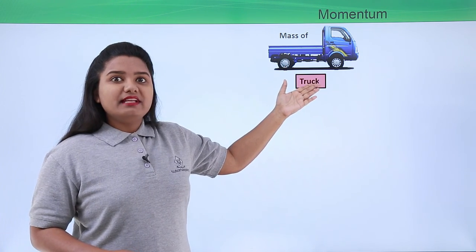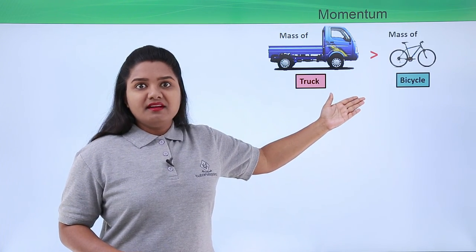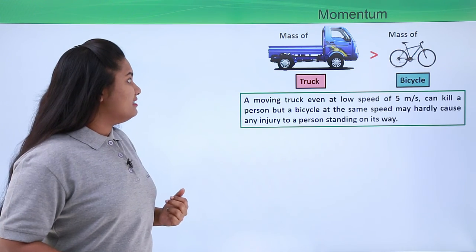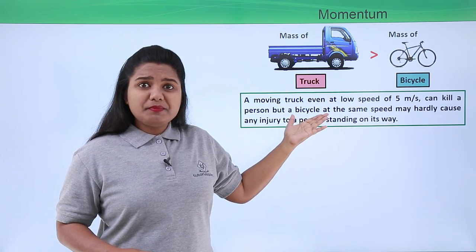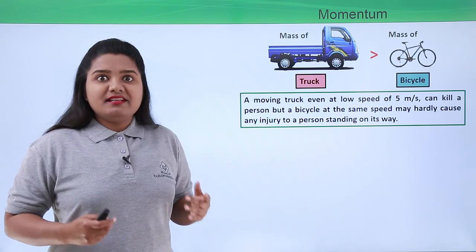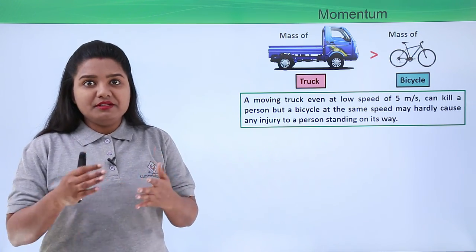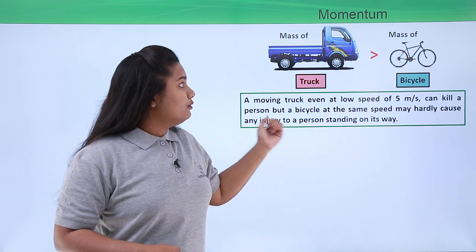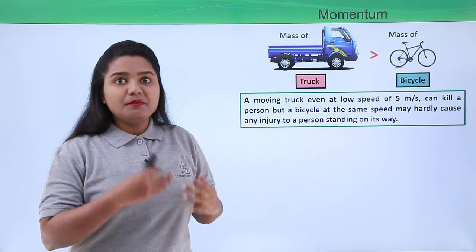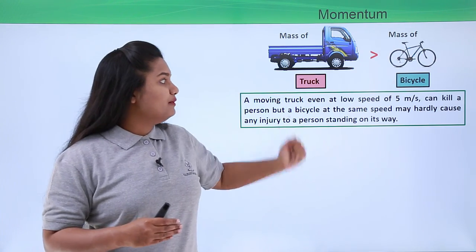We clearly know that the mass of a truck is much more than the mass of a bicycle. If these two objects are moving with the same speed, a truck moving even at a very low speed of five meters per second can kill a person in its way, but if the bicycle moves at that same speed it hardly makes any impact. The impact the truck produces at five meters per second is much greater compared to the bicycle.